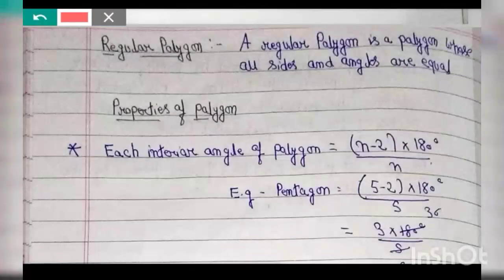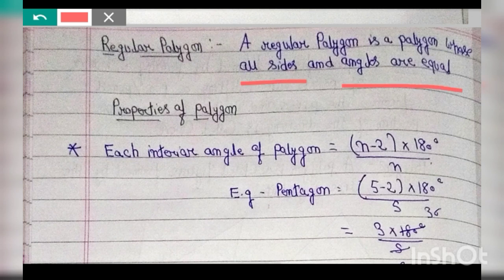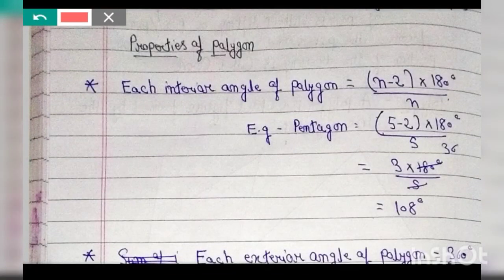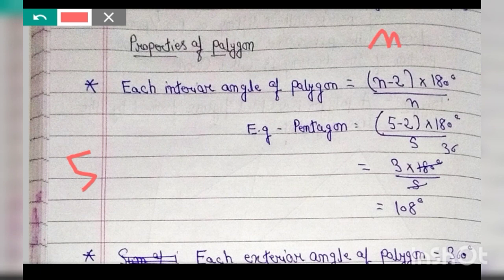After that, we know what a regular polygon is. A regular polygon is a polygon whose all sides and all angles are equal — we call it a regular polygon. Here are some polygon properties. Each interior angle of a regular polygon equals (n minus 2) into 180 degrees, divided by n.